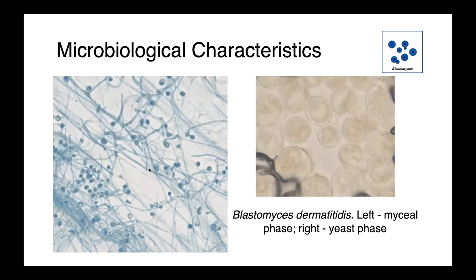In the next few slides, I'm going to show you some images of just how different the two forms of these organisms are. Here we have Blastomyces dermatitidis. On the left, you can see the mycelial phase, with abundant fungal hyphae throughout the image and blastospores. On the right, you can see the yeast phase — these large budding yeast structures that grow at elevated temperatures in the lab or within the body.